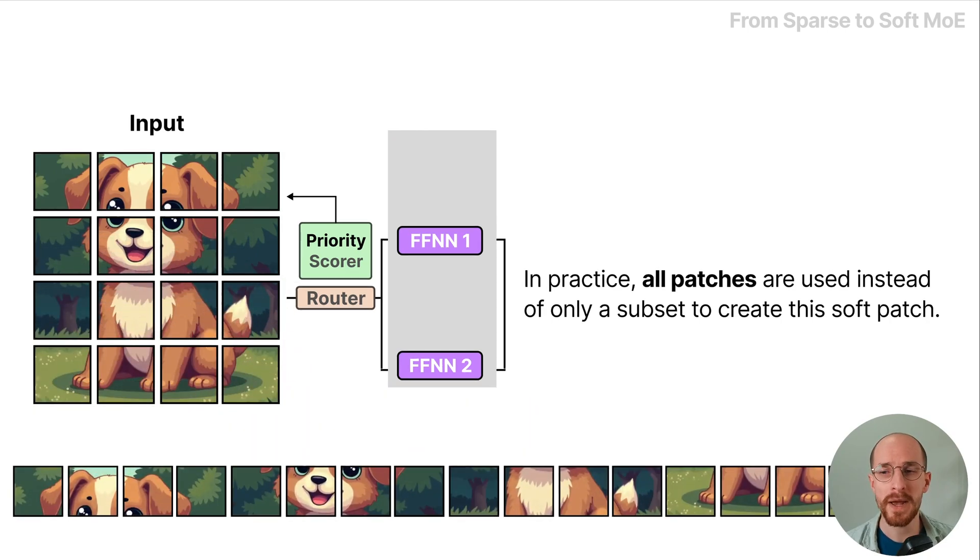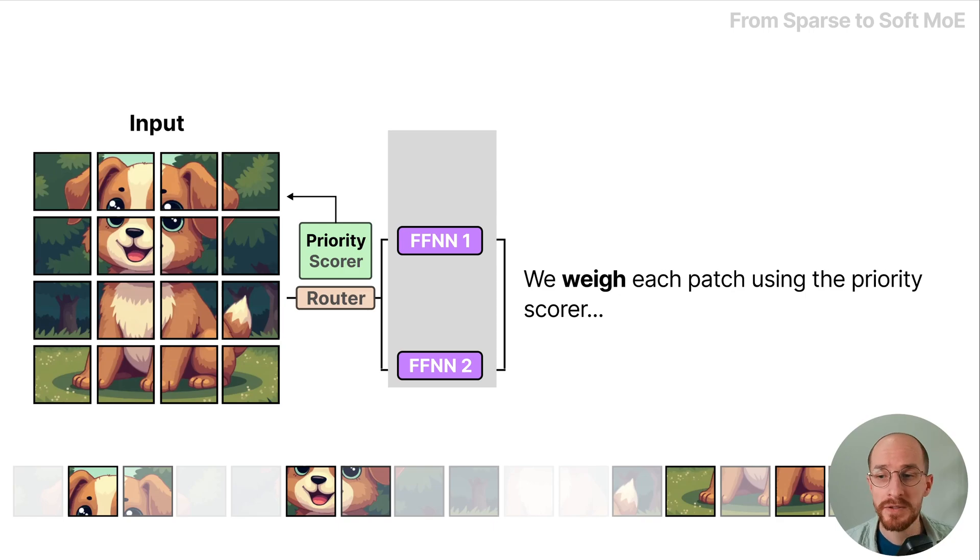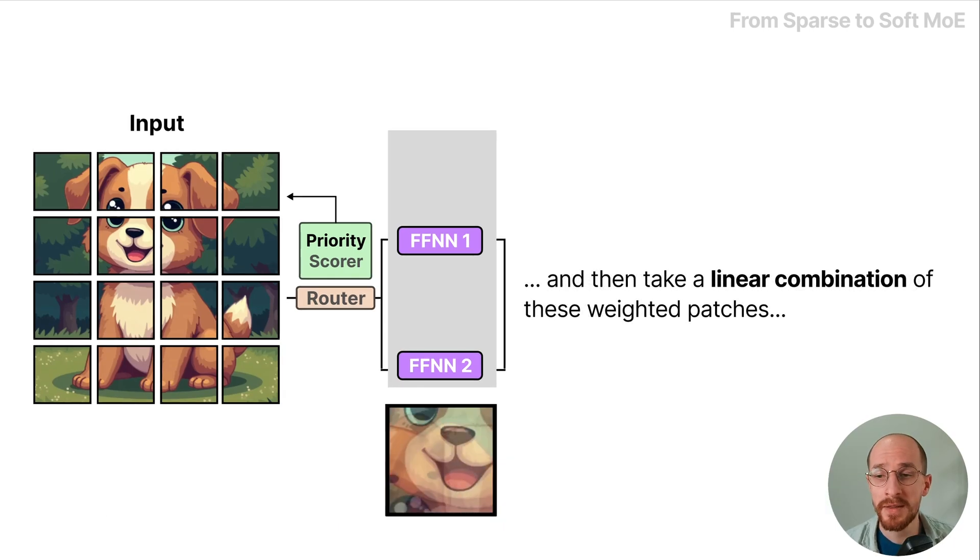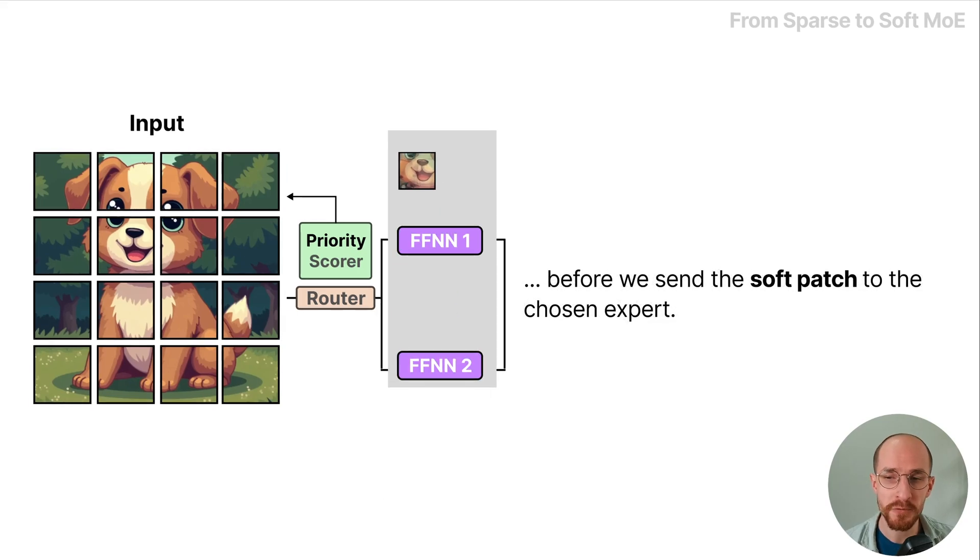In practice all patches are used instead of only a subset to create the soft patch. We weigh each patch using the priority score and then take a linear combination of these weighted patches before we send the soft patch to the chosen expert.